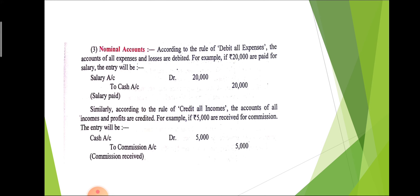One more example: if 5,000 are received from commission, that is income. Commission is an income, and the rule says credit all incomes, so we credit commission account. Cash comes into the business, so cash account is debited. The overall journal entry is: cash account debit to commission account, by rupees 5,000. In brackets, 'commission received' is written — that is the narration, the description of the transaction.